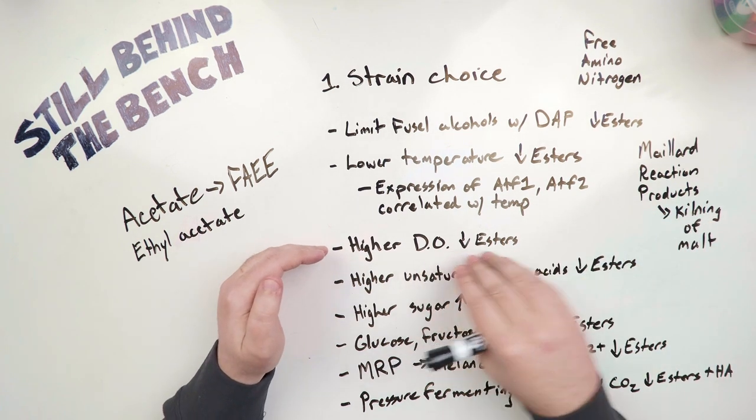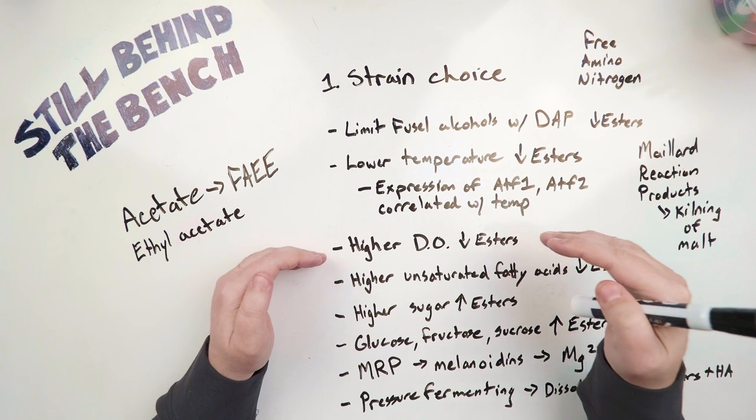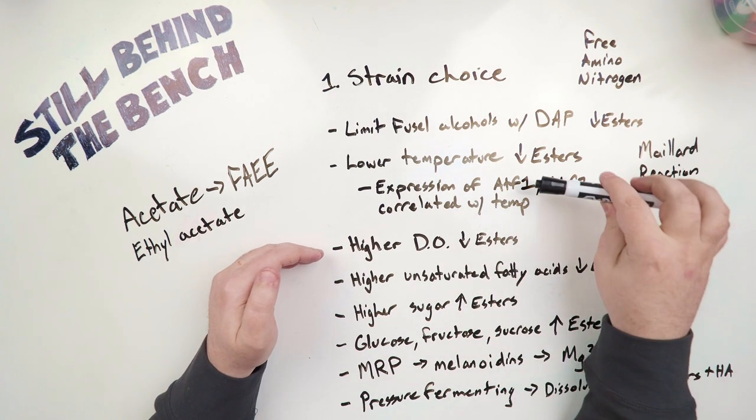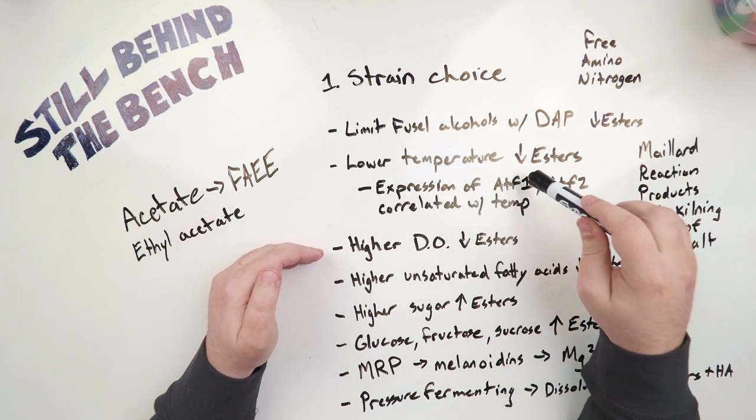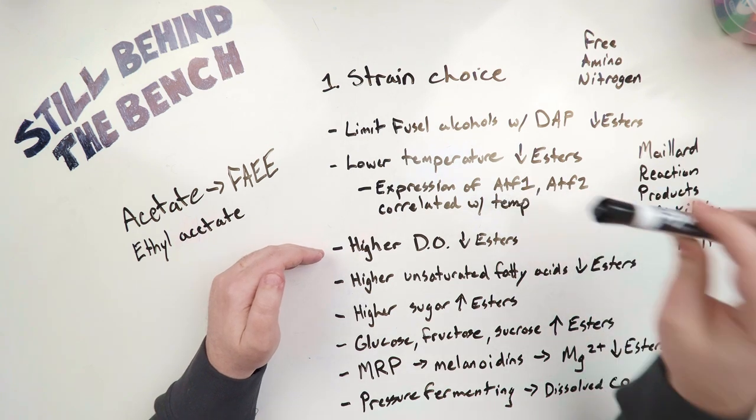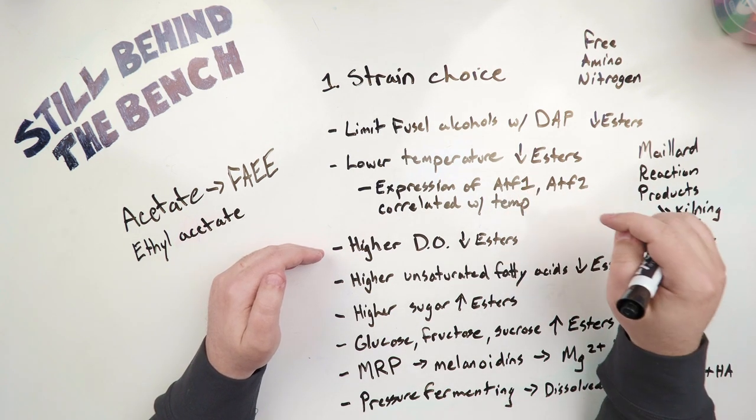The next one, higher dissolved oxygen will lead to less esters produced because dissolved oxygen is actually an inhibitor of the expression of the ATF1 enzyme. More dissolved oxygen, less of this enzyme is produced, less ester.